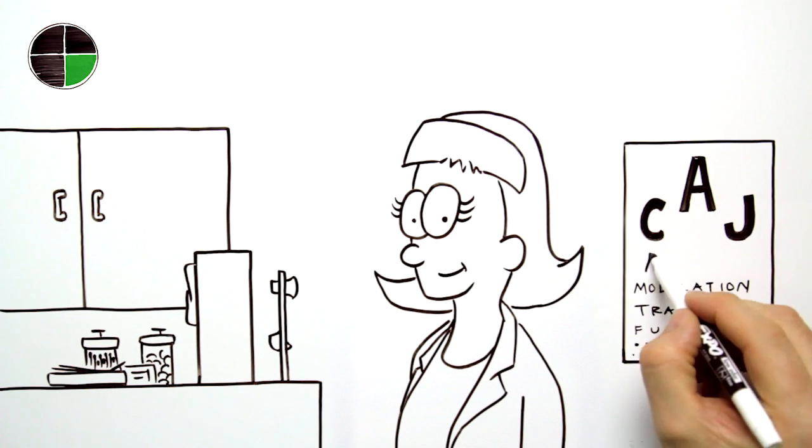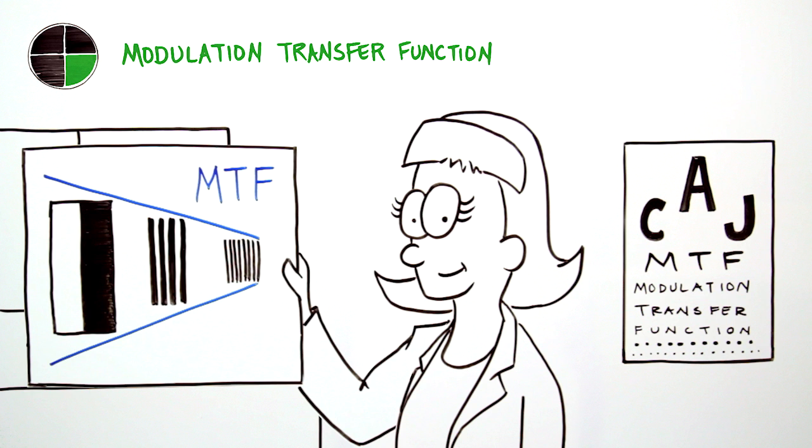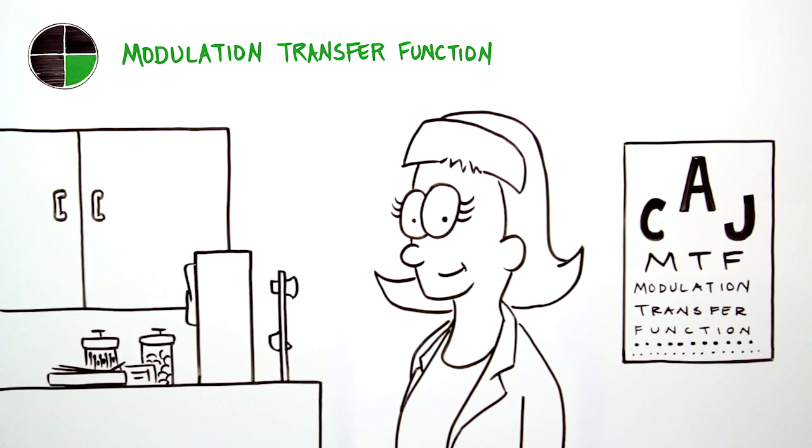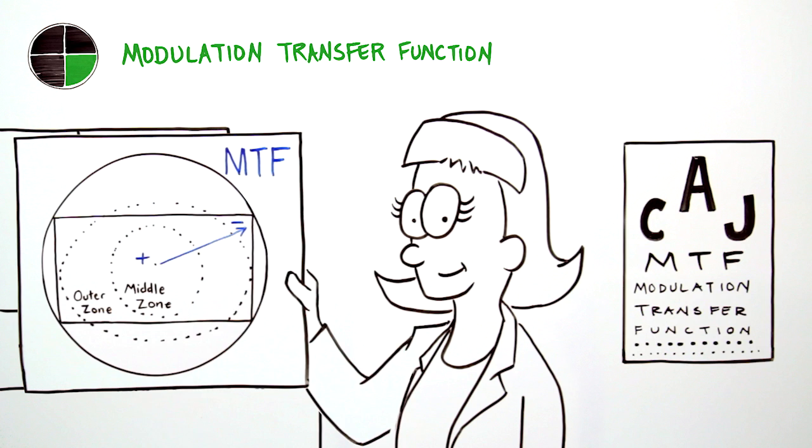Our third benchmark, modulation transfer function, measures how the image contrast, or sharpness, is maintained as detail changes. Optical physics dictates that MTF naturally declines as detail increases. MTF also falls off when moving from picture center to the extremities.